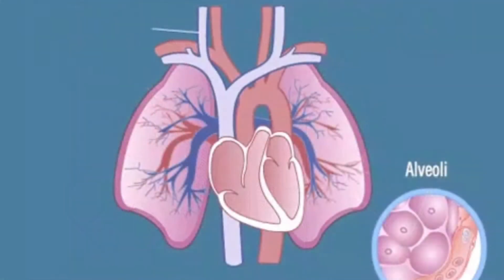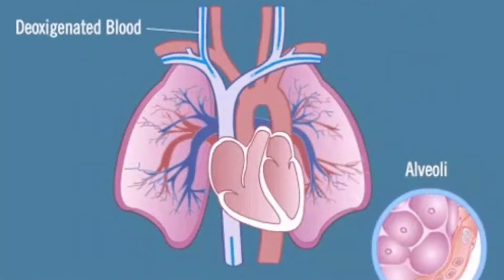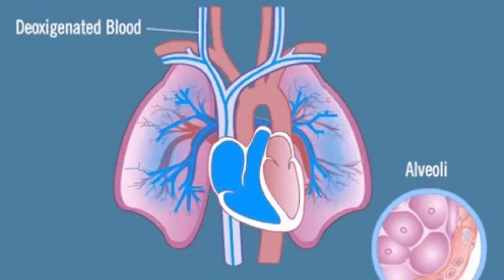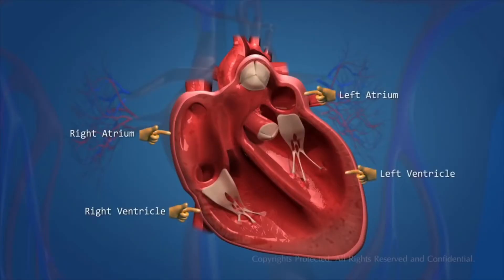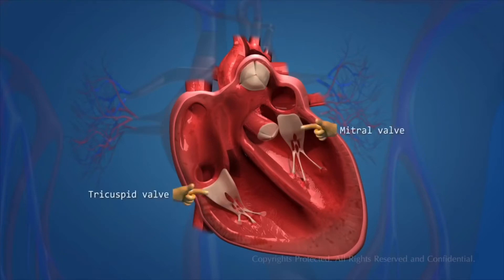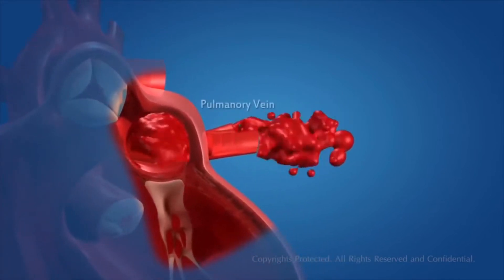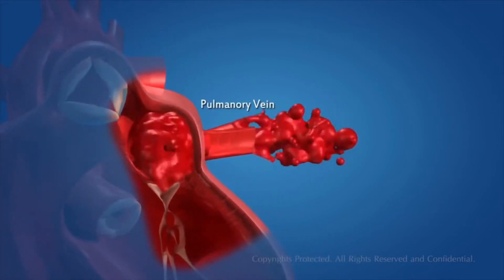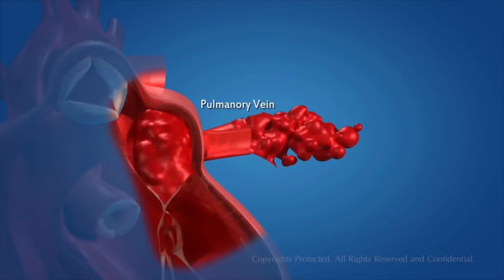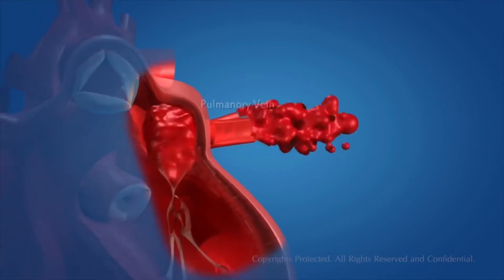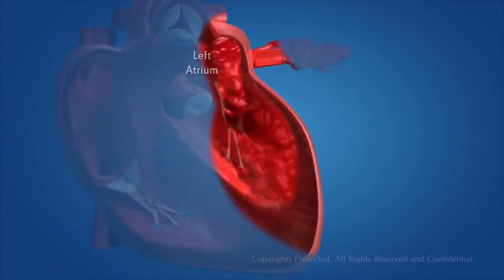In pulmonary circulation, blood completes its circulation from the right ventricle to the left atrium through the lungs. The deoxygenated blood is pumped by the right ventricle into the pulmonary artery, while the left ventricle pumps blood into the aorta. The deoxygenated blood is passed to the lungs, from where the oxygenated blood is carried by the pulmonary vein into the left atrium of the heart.